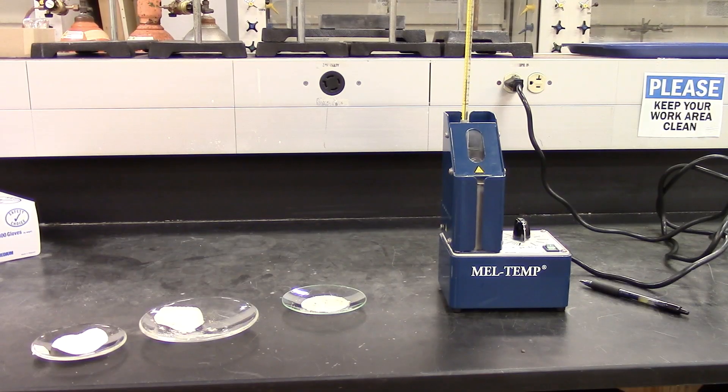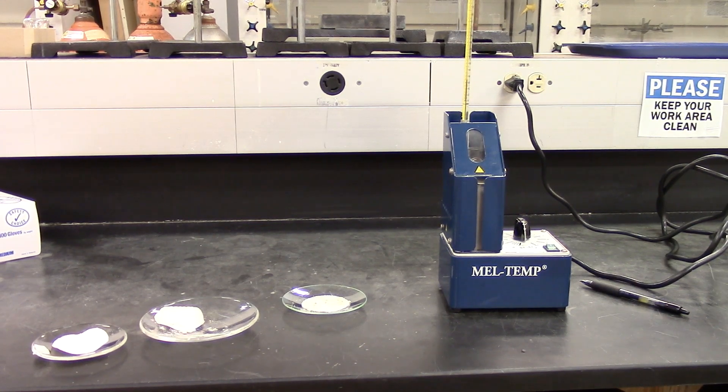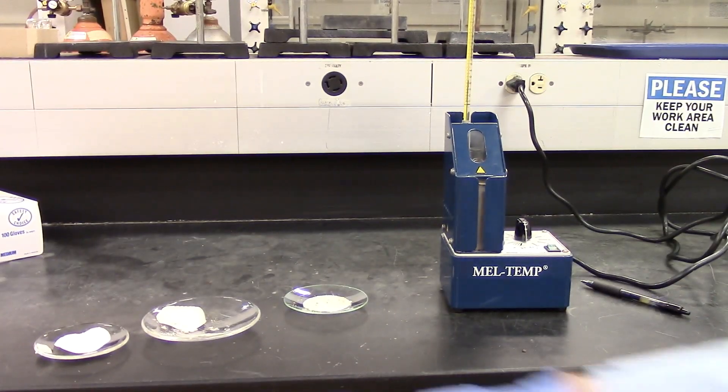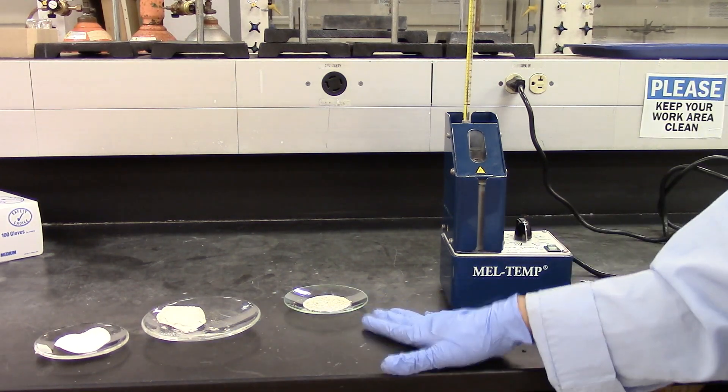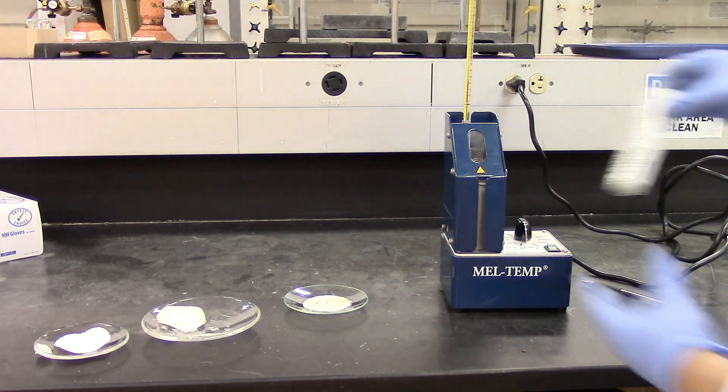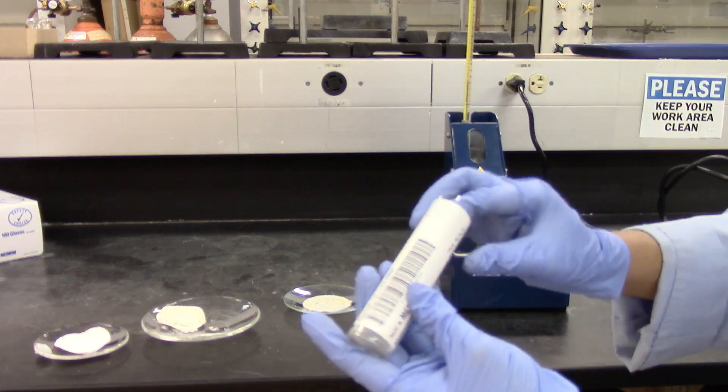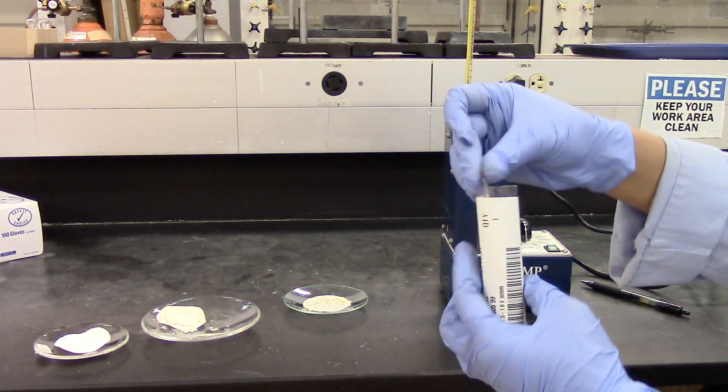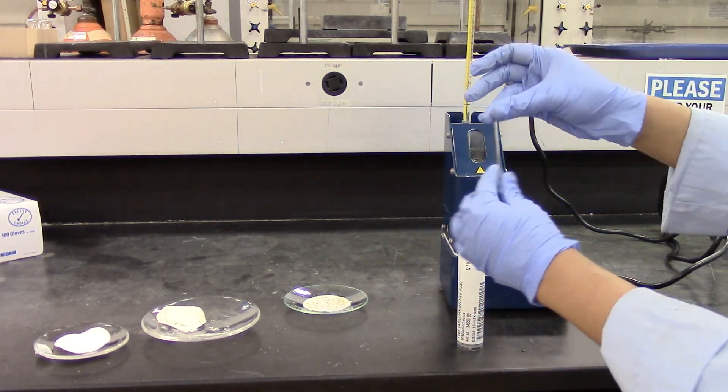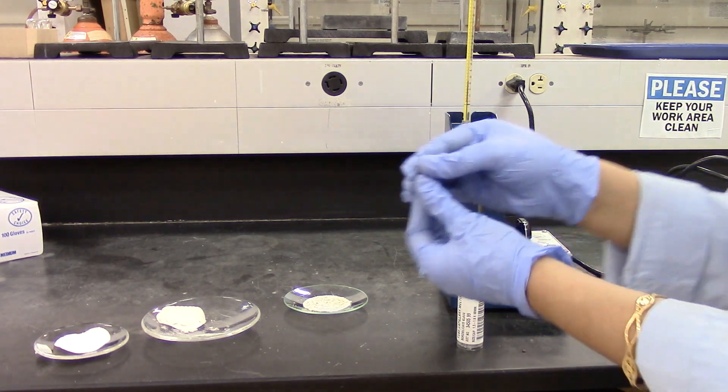So that's the melting point apparatus. And we have our three products: the aniline product, the acetanilide product and anisole product. I'm going to put some of the sample from each one into a melting point capillary. And the melting point capillary looks like this.